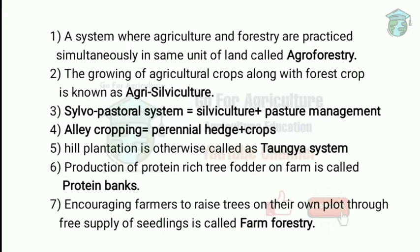Next, alley cropping: perennial hedge plus crops. Alley cropping is where a woody species in hedges is grown with agricultural species in rows. So in row management, both woody species as well as agricultural species are grown — that is called alley cropping. Hill plantation is otherwise called the taungya system.